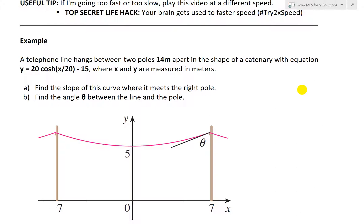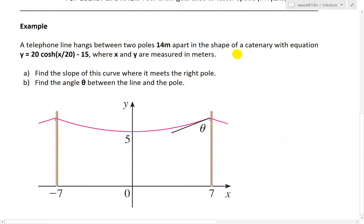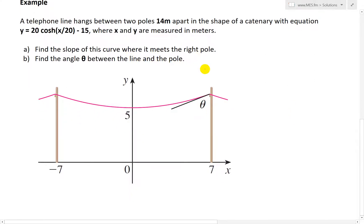So let's just jump right in and look at this example, which states a telephone line hangs between two poles 14 meters apart in the shape of a catenary with equation y equals 20 cosh x over 20, minus 15. And where x and y are measured in meters, and we're asked for part A, find the slope of this curve where it meets the right pole, and for part B, find the angle between the line and the pole.